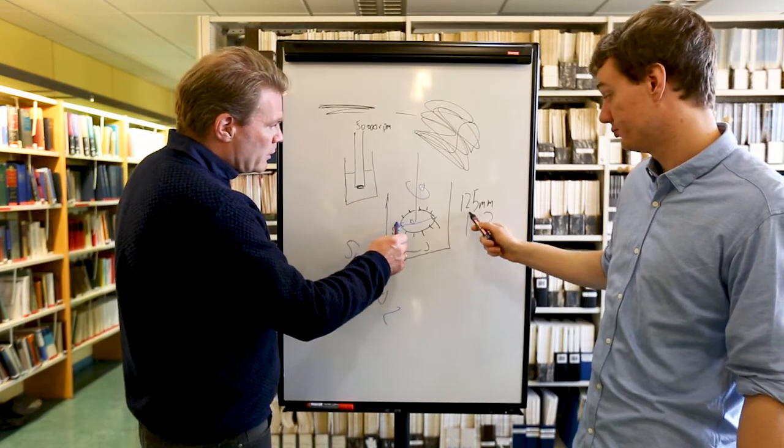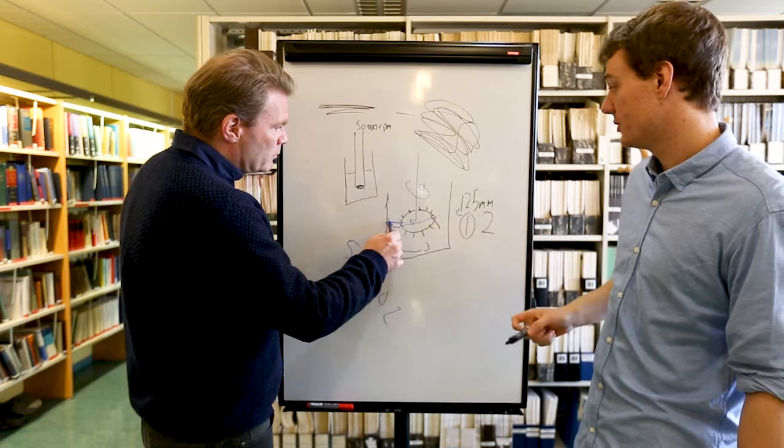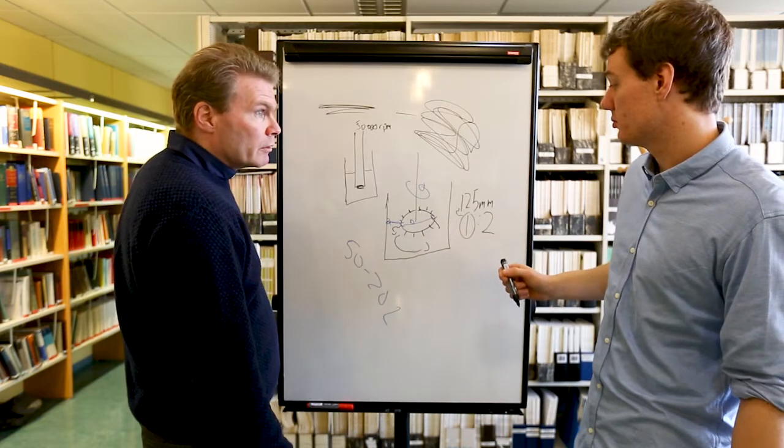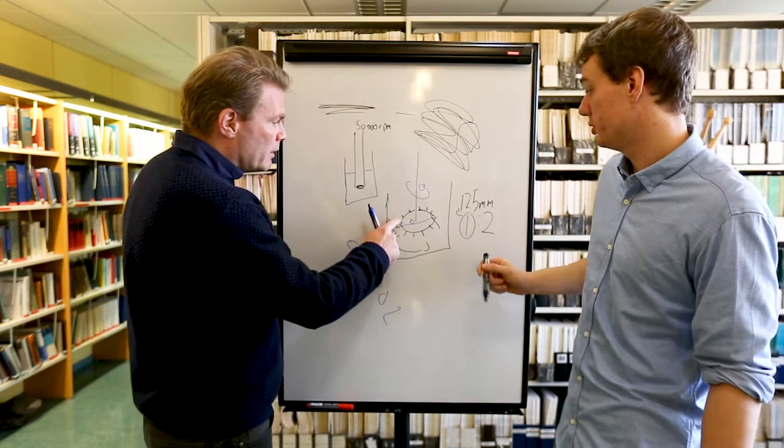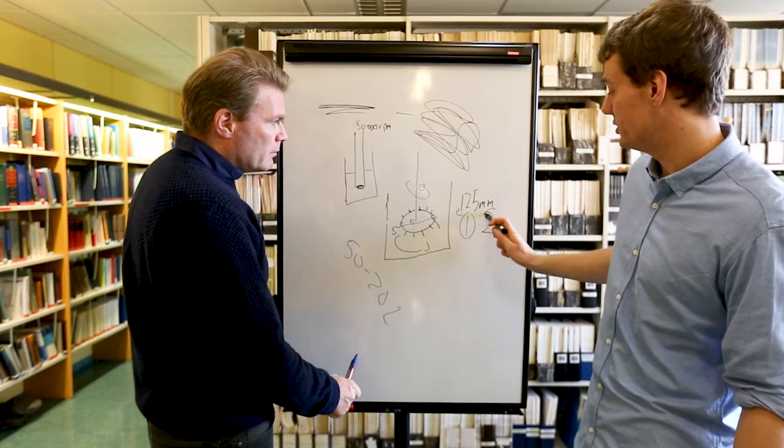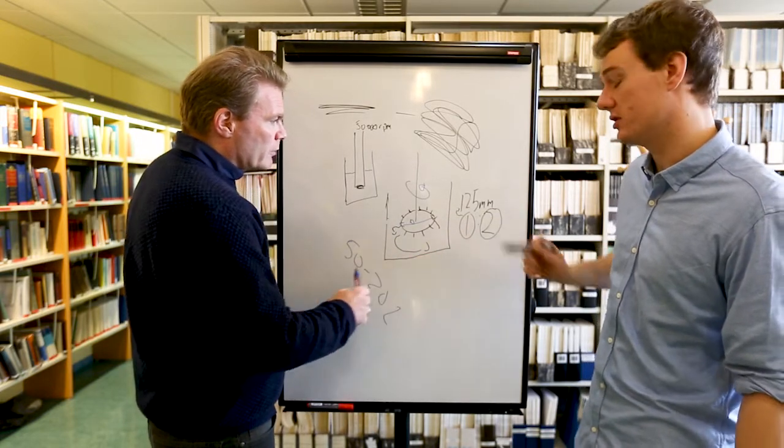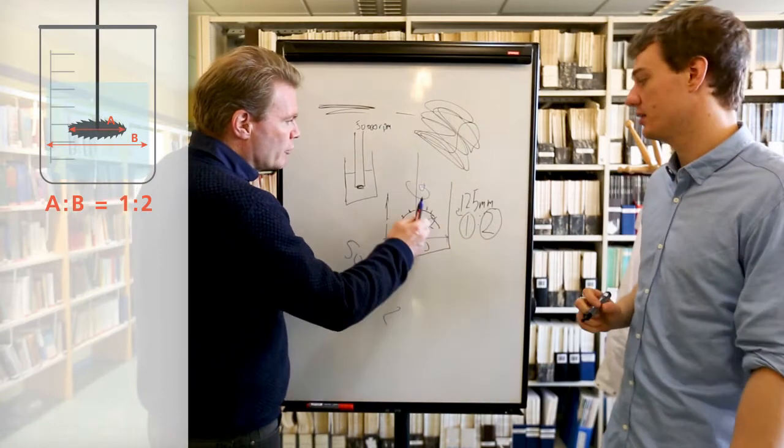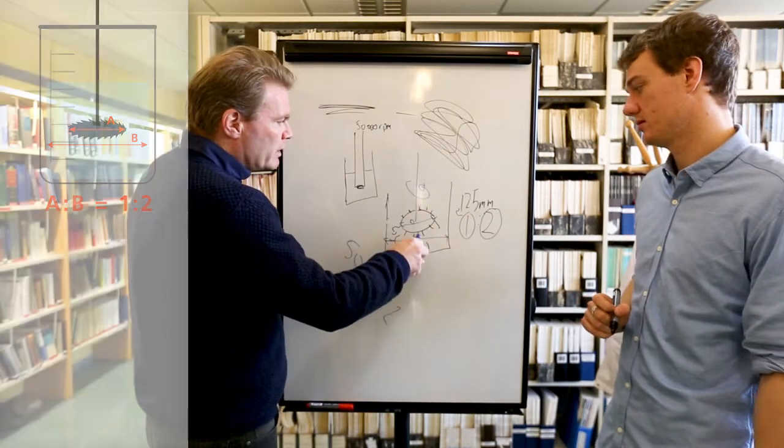One being the disc diameter, and the other one is the diameter of the vessel. So it's this ratio versus this ratio.